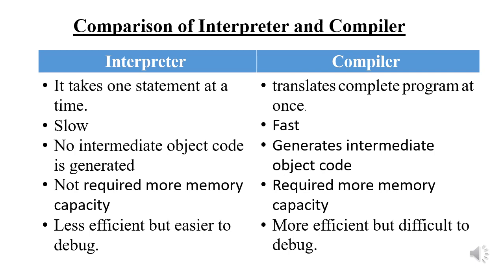Interpreter does not generate intermediate code while converting a program, but compiler generates intermediate code. That is, when the compilation is finished, another file has been automatically created. Therefore, more memory capacity is required during conversion by compiler.